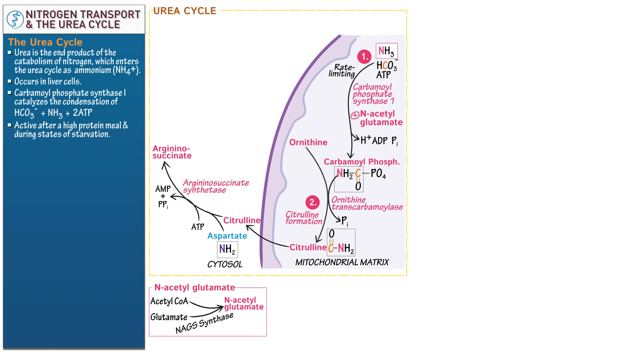Now draw the terminal carbon of argininosuccinate so we can see that its two nitrogens form from both the free ammonia from the beginning of the cycle and the aspartate. Next, show that argininosuccinate cleaves this large molecule into arginine and fumarate.